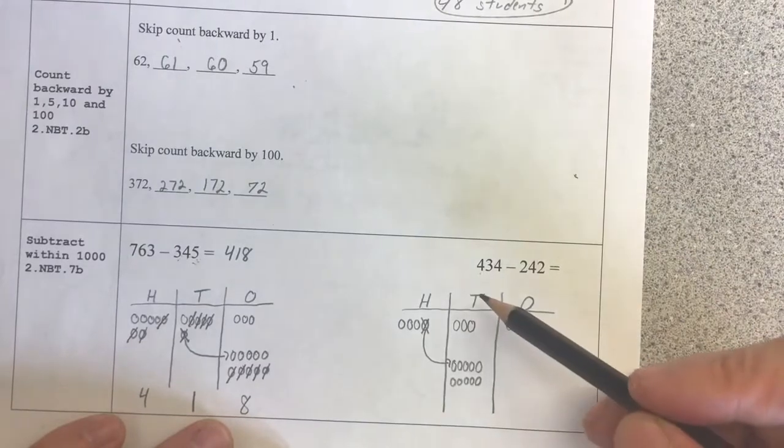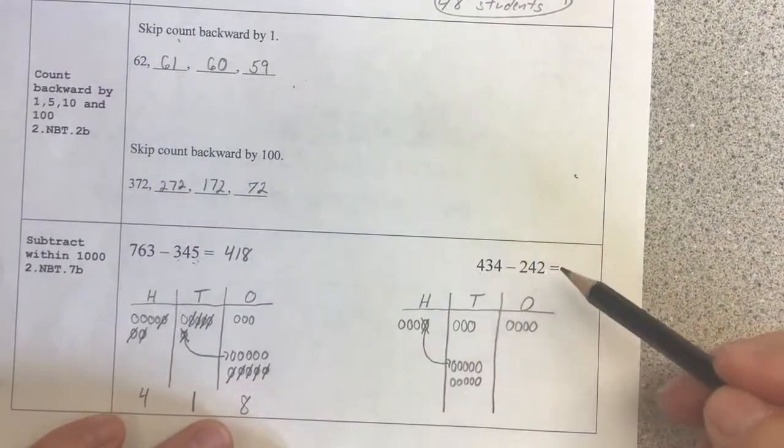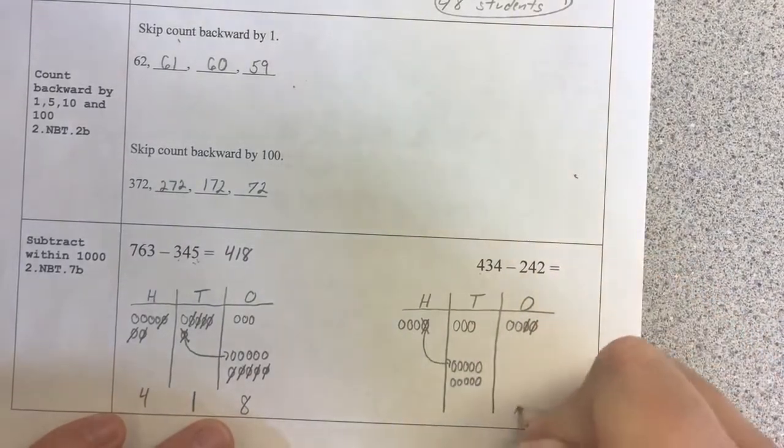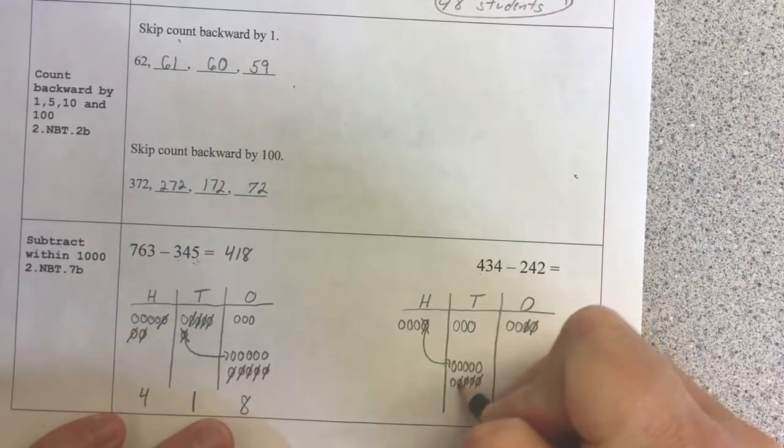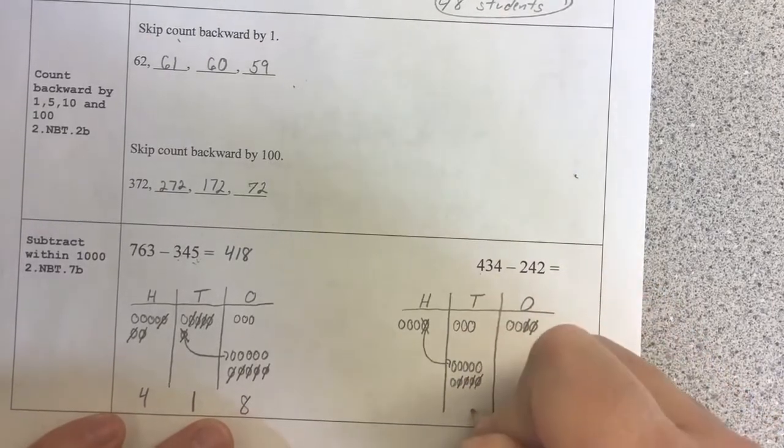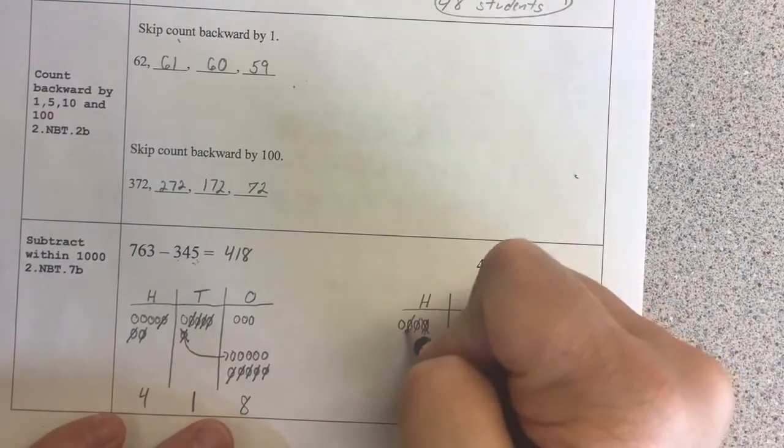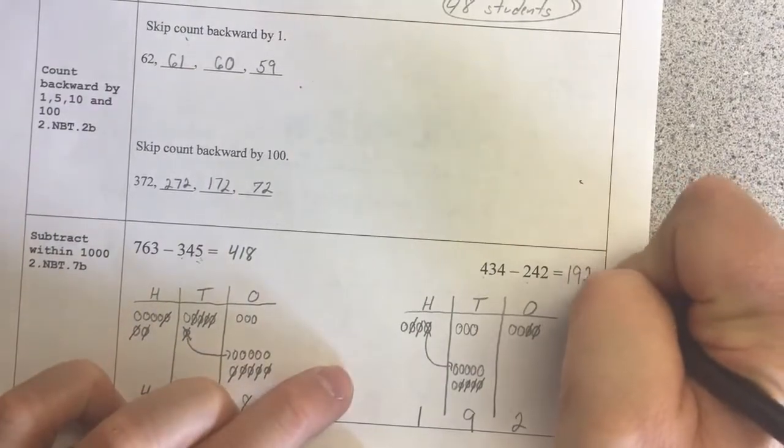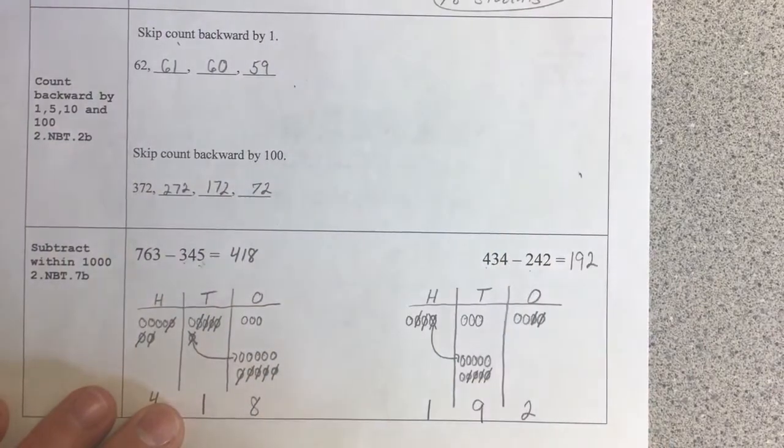And now I have my ones, I have my tens, and I have my hundreds. So now I'm going to cross off 242. So first, 2 ones. And now 4 tens. 1, 2, 3, 4, 5, 6, 7, 8, 9. And now my hundreds. So 100, 92. So that's how I can use that place value chart to do that multi-digit subtraction.